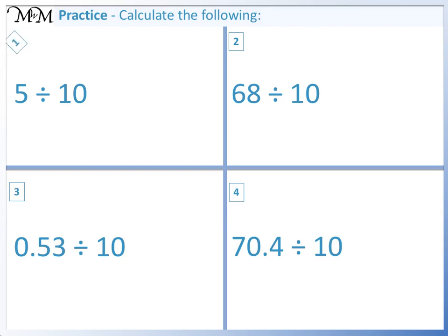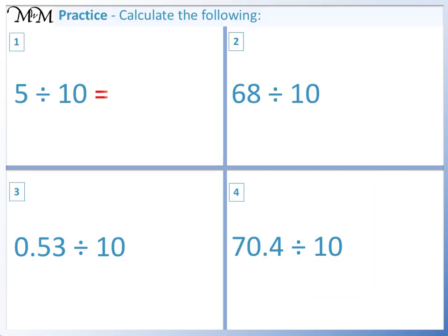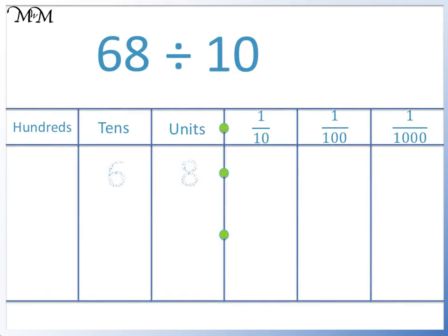Question 1: 5 divided by 10. We move the 5 one place to the right, from the units column to the tenths column. There are no digits to the left of the decimal point, so we write in a zero. Our answer is 0.5. Question 2: 68 divided by 10. We move each digit one place to the right — we move 6 to the units column and 8 to the tenths column. Our answer is 6.8.